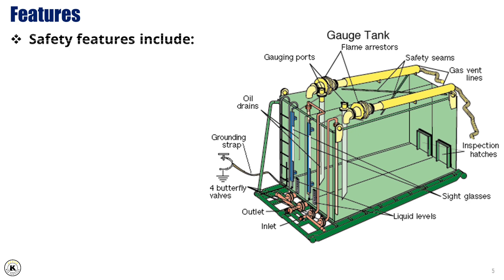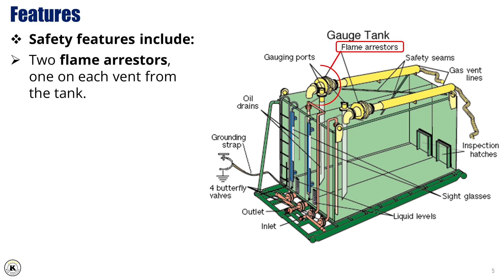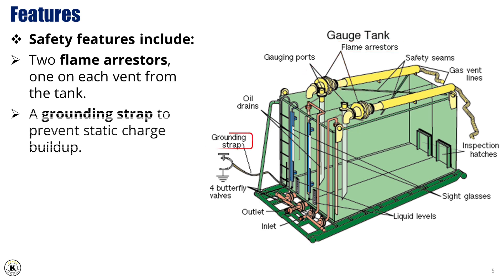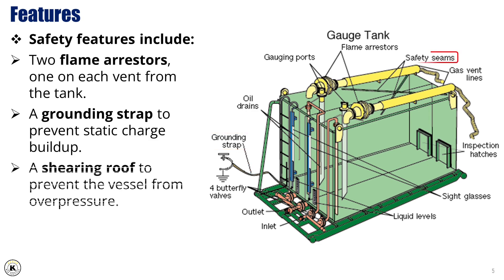Now let's take a look at the safety features of the atmospheric gauge tank. Each tank is equipped with two flame arresters, one installed on each vent, to prevent any external ignition sources from reaching the contents. A grounding strap is also in place to discharge static electricity, reducing the risk of sparks during operation. Lastly, the tank is designed with a shearing roof, which acts as a safety relief to prevent overpressure, helping to protect both the equipment and personnel on site.